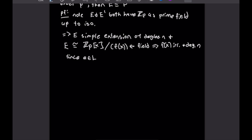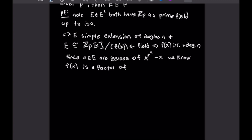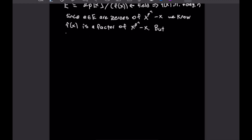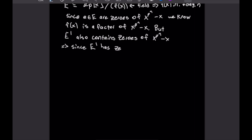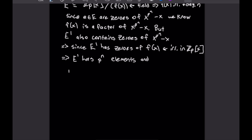Since all the elements — call them little e in big E — are zeros of x^(p^n) − x, by definition, we know that f(x) is a factor of x^(p^n) − x. But E prime also contains zeros of x^(p^n) − x, and since E prime has zeros of f(x), which is irreducible in Z_p adjoin x, that means E prime must have p^n elements and E prime is isomorphic to Z_p adjoin x mod f(x).